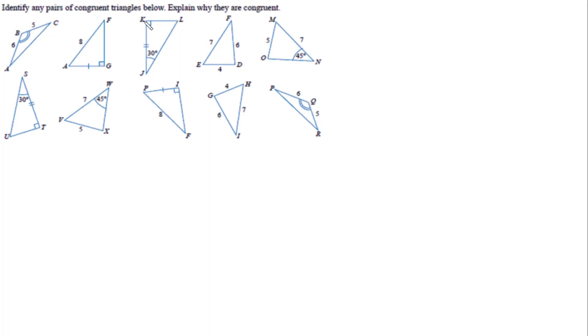In this video I'm looking at this question, where we're asked to identify any pairs of congruent triangles below and explain why they are congruent. So we've got 10 triangles here, and I want to know what pairs of them are congruent. Congruent means that they are exactly the same shape — they have the same sides, the same angles, and they're the same size.